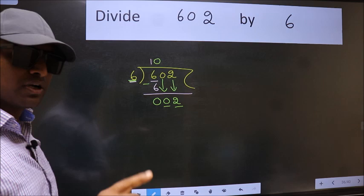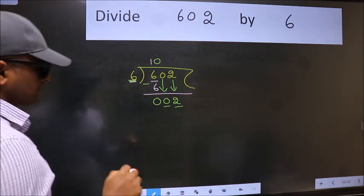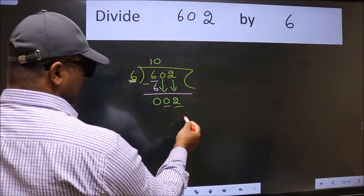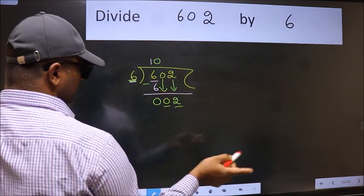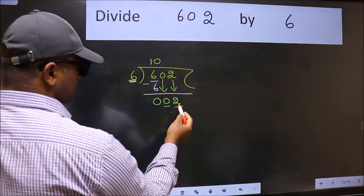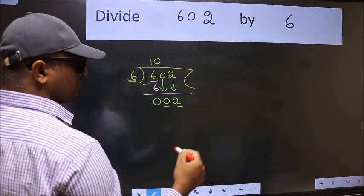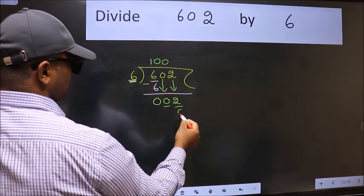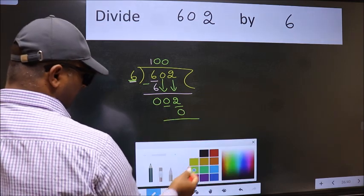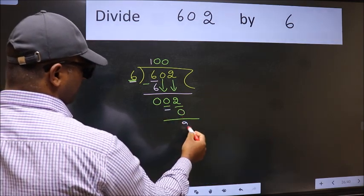Instead of that, what you should think of doing is, which number should we take here? If I take 1, we will get 6. But 6 is larger than 2. So what we do is, we take 0. So 6 into 0, 0. Now we subtract. We get 2.